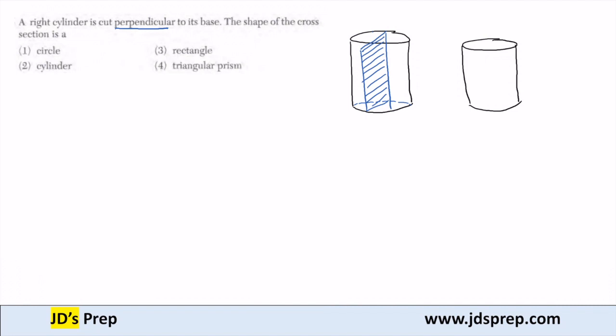Versus if you were to cut it parallel to the base. So let's say if the question asks, the right cylinder is cut parallel to the base. Then a parallel cut would be cutting it right horizontally, which would actually get you a circle as your cross section.